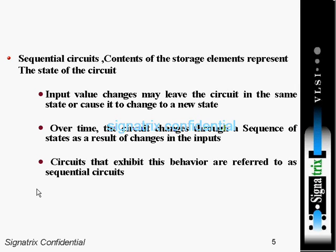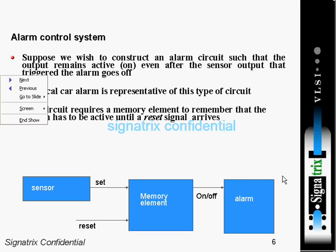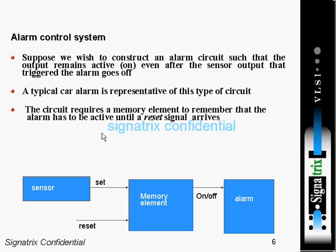You can see an alarm control system implemented with the help of sequential logic. The memory element is used to store the state of the circuit. Suppose we wish to construct an alarm circuit such that the output remains active even after the sensor output that triggered the alarm goes off. When the switch is on, your alarm will ring; if it's off, the alarm still stays on. A typical car alarm is representative of this type of circuit.